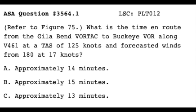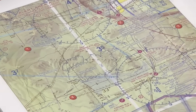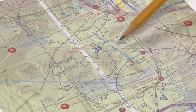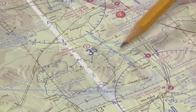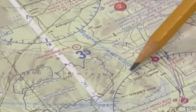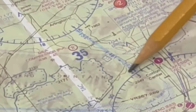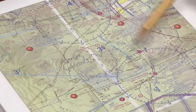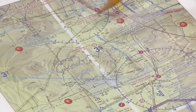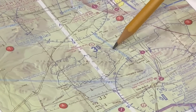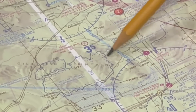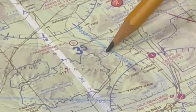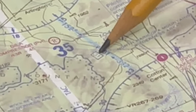Looking at figure 75, our sectional chart excerpt, the first thing we want to do is find Victor 461 airway and identify the course. The course is labeled right by the airway identification — here we can see a course of 332 degrees. Next, let's find the distance between the VOR stations, indicated in the box just beside the airway. We can see it shows a distance of 31 nautical miles.